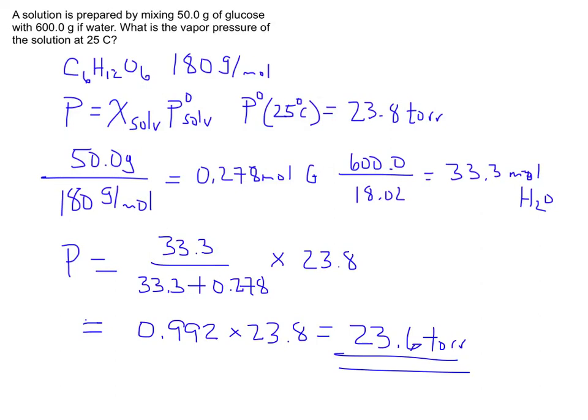So the vapor pressure didn't go down by an awful lot. I added a good 50 grams of glucose into 600 grams of water, and the vapor pressure was barely affected, but it was affected in a way that I could calculate. It went from 23.8 down to 23.6. That's our first practice problem.